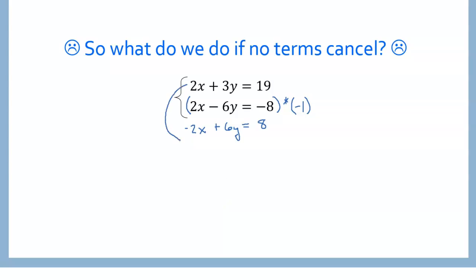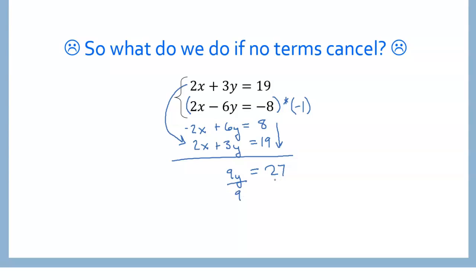Now we bring that first equation down and write it directly underneath. We can add straight down now. The negative 2x and the 2x will cancel. 6y and the 3y will be 9y. And 8 plus 19 is 27. So 9y equals 27. We have one step to get y by itself — divide by 9 — and y equals 27 divided by 9, which is 3.